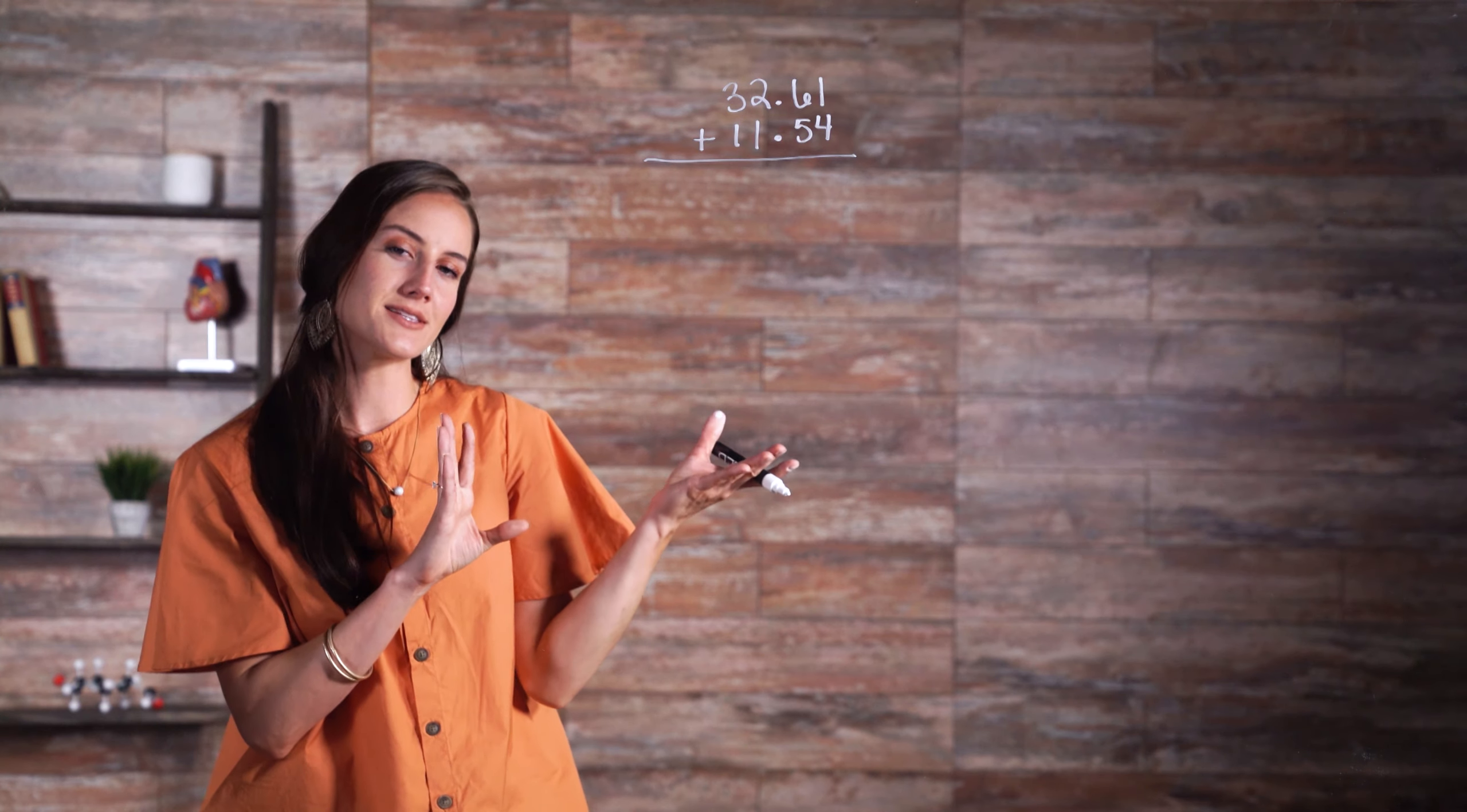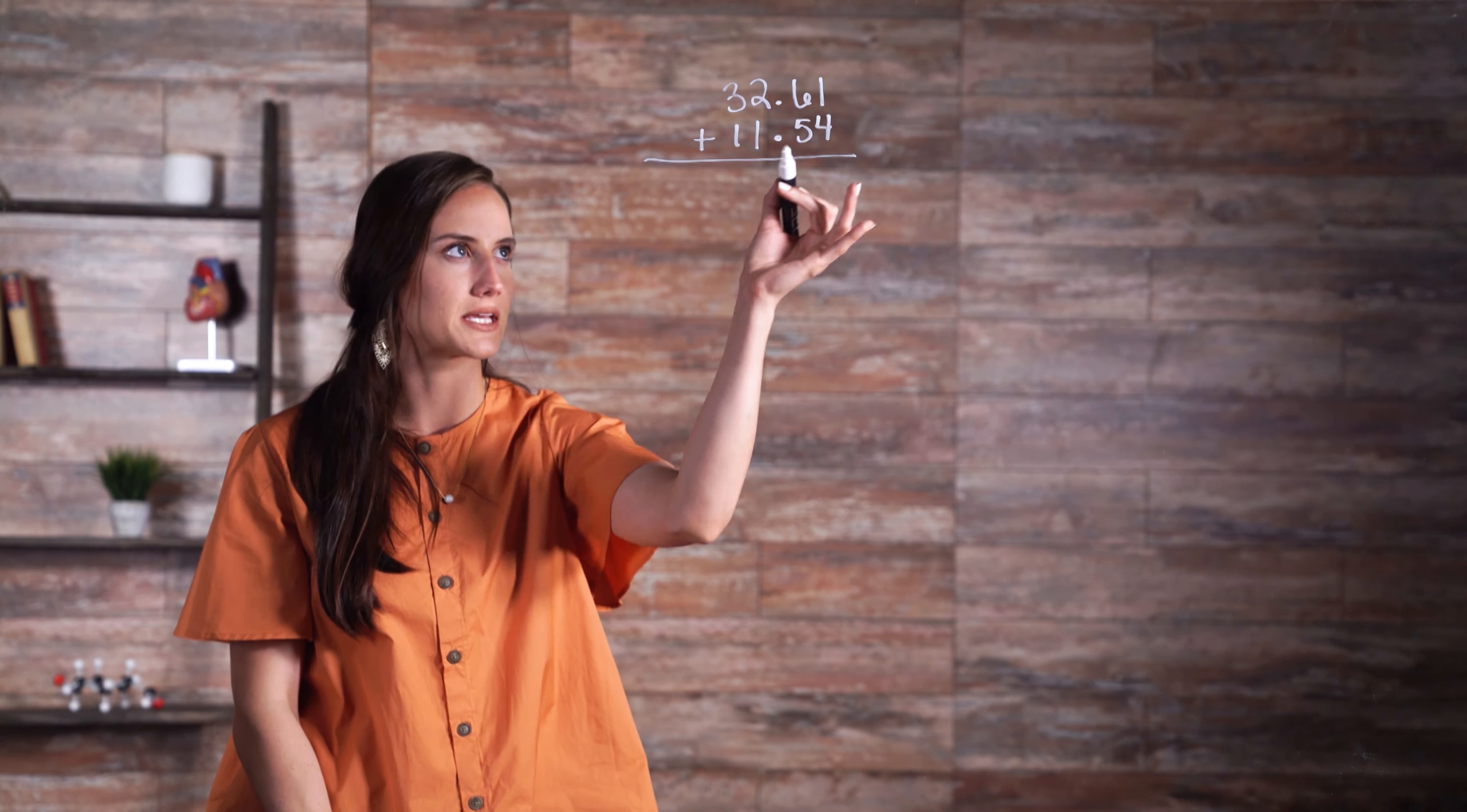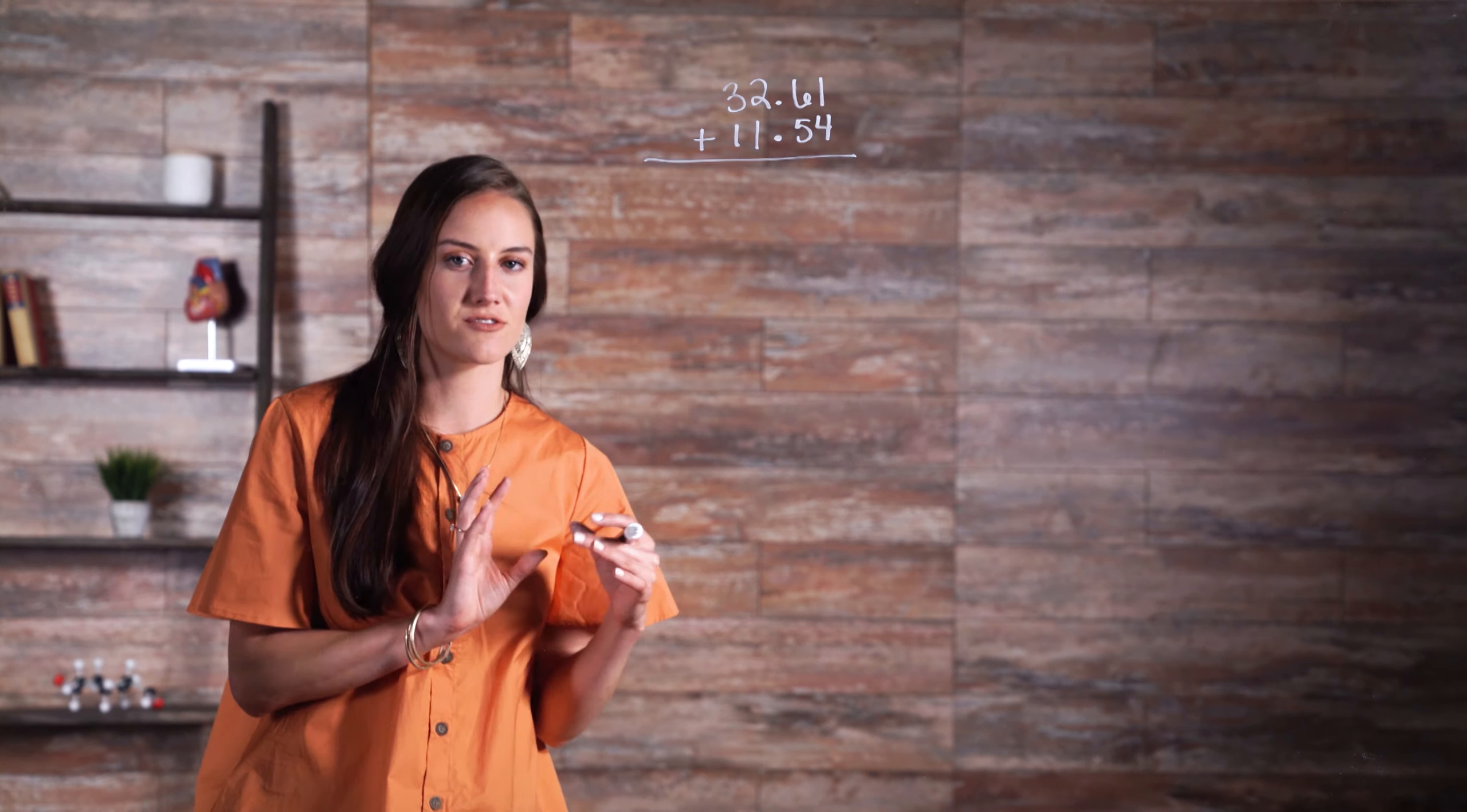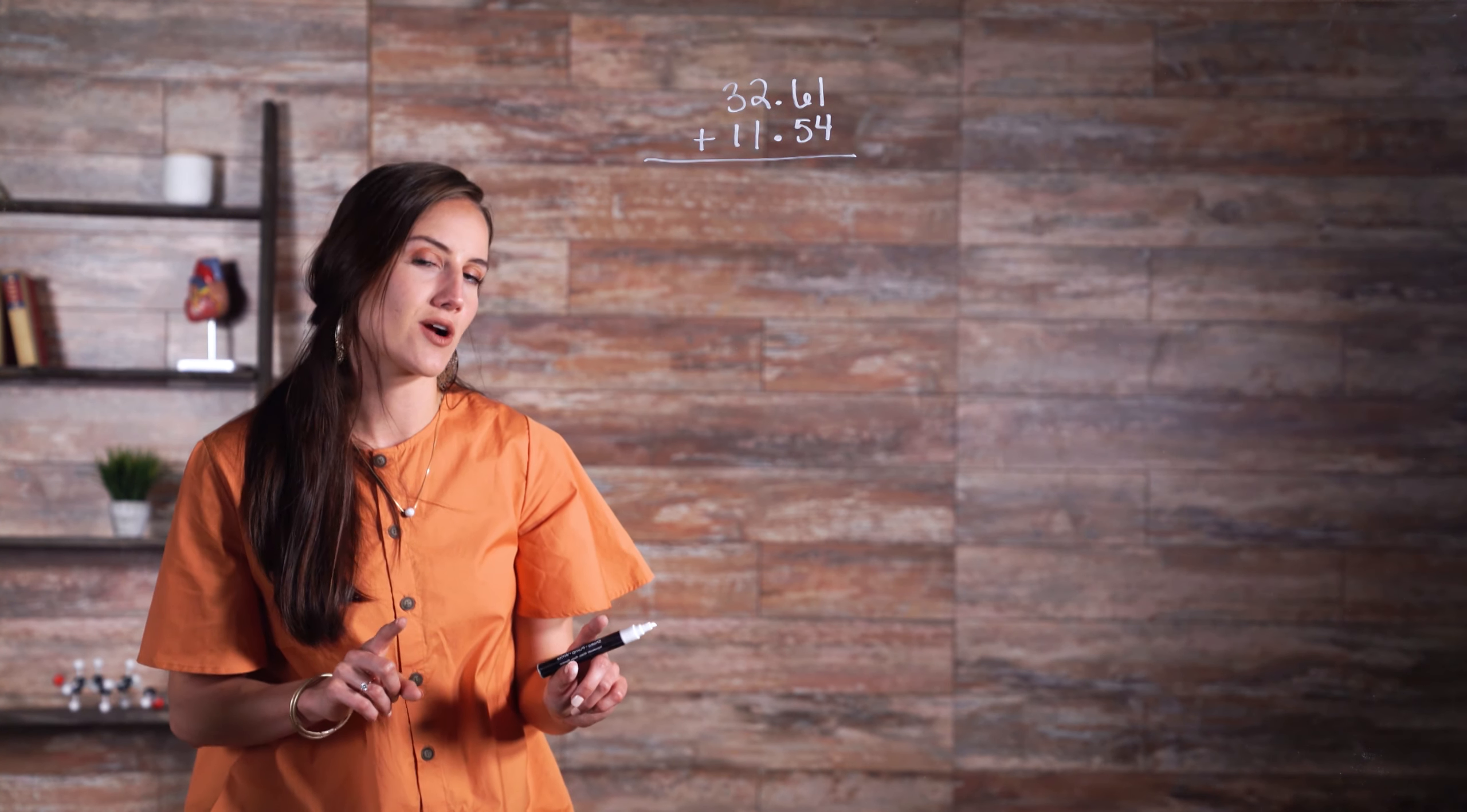The first step, as you can see, is to line up the two decimals. Note that because of the commutative property of addition, it does not matter which decimal is placed first. However, it will make a difference when we do subtraction.